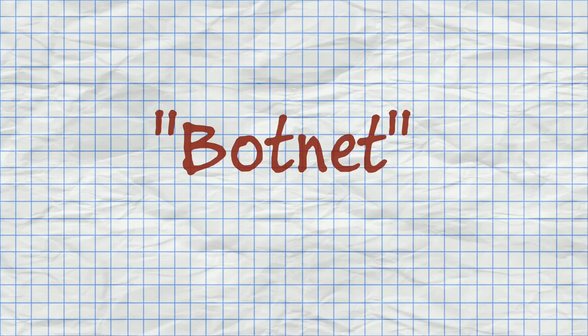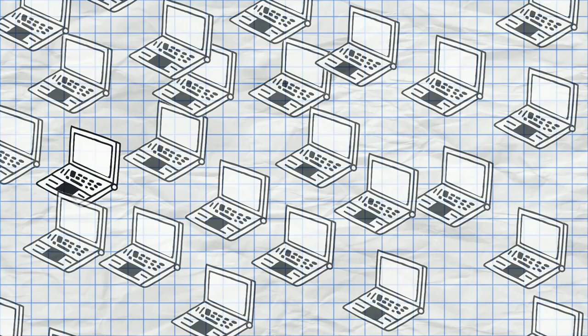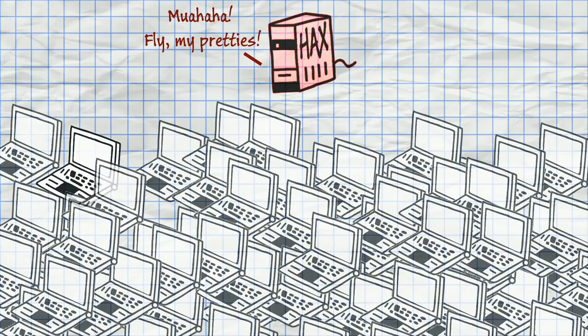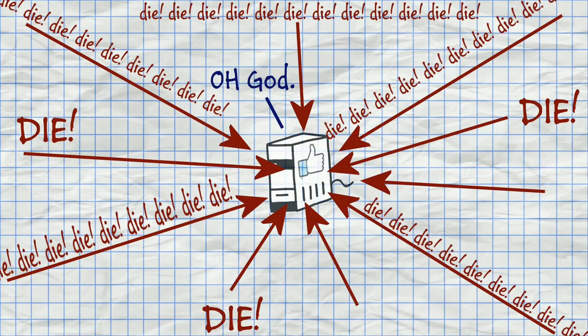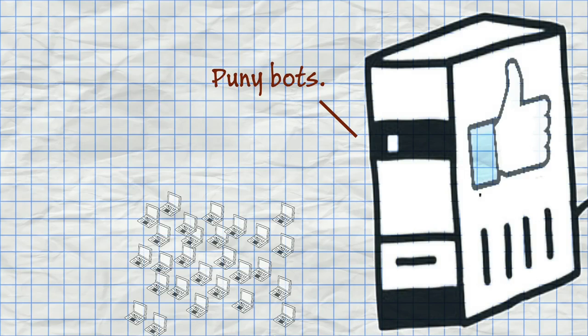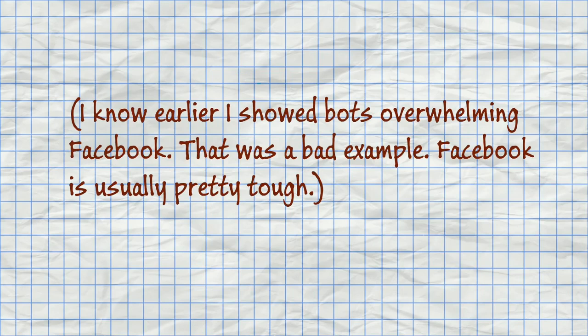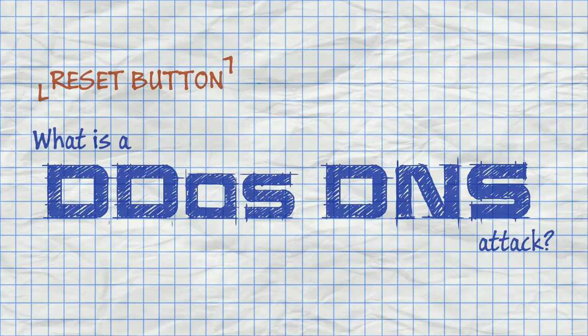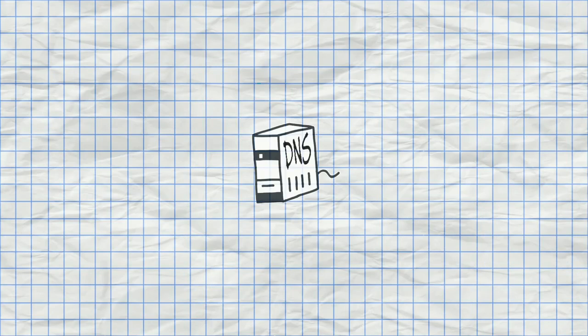If the hacker tells all of those computers to flood one website at the same time, their combined efforts may be enough to overwhelm it. This network of hacked computers is called a botnet, and each hacked computer is called a bot. A hacker tricks thousands of people into downloading malicious software, turning their computers into mindless slaves that form a botnet, and then orders all the bots to overwhelm a single server. But some sites — like Facebook, Google, and Reddit — have massive server infrastructure that can shrug off a typical botnet.